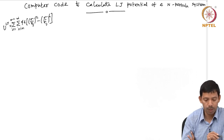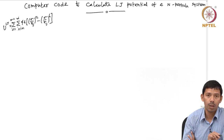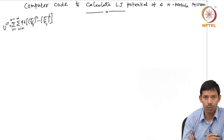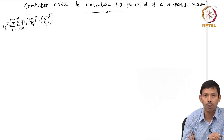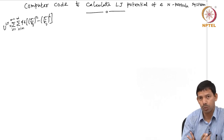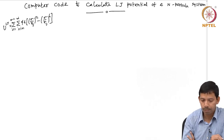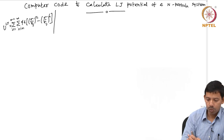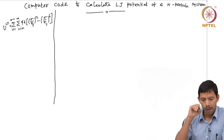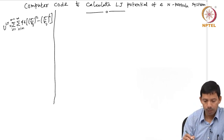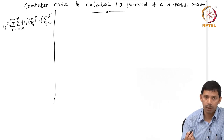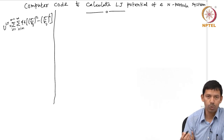If you maintain this limit, you are not over-counting the same interaction. You are not counting the 2-1 interaction since you already counted the 1-2 interaction. To do this, first we have to know the values of epsilon and sigma — they are constant values and do not change.